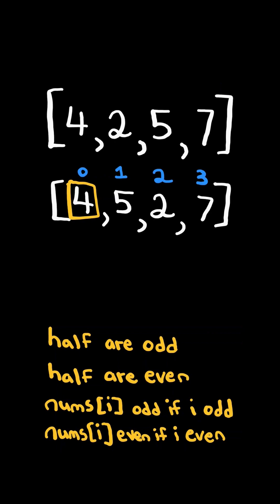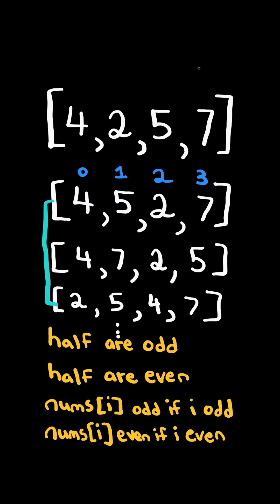For example, 4 is even and its index is even, and similarly, 5 is odd and its index is odd. Similar for 2 and 7, the numbers' parity matches the index. There can be many different lists that satisfy the conditions, but we can return any list.